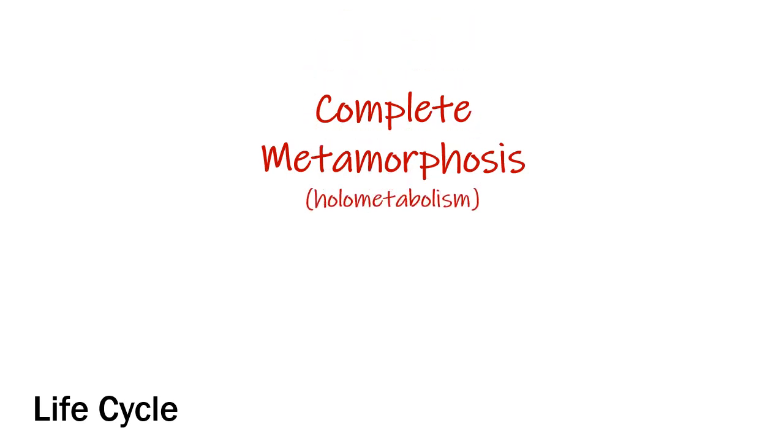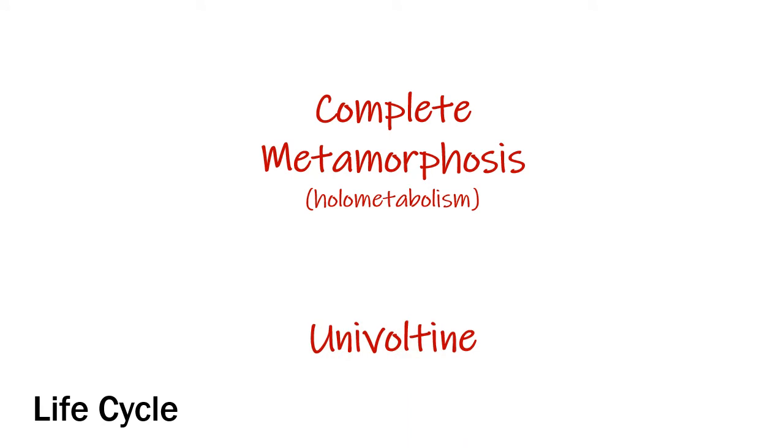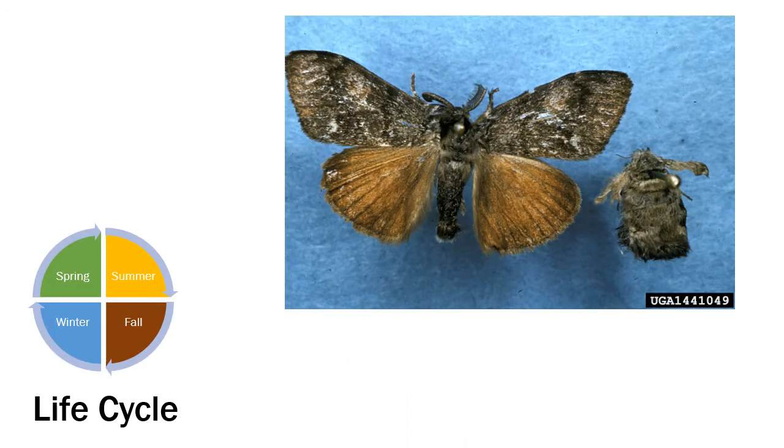The life cycle of the Douglas fir tussock moth is similar to that of other butterflies and moths. They undergo complete metamorphosis. This species is univoltine, with a single generation per year. So let's begin in late summer when the adults emerge.